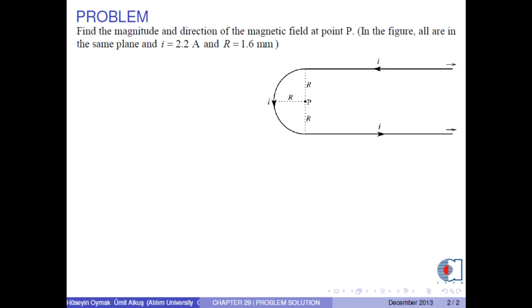Find the magnitude and direction of the magnetic field at point P. In the figure, all are in the same plane and I equals 2.2 amperes and R equals 1.6 millimeters.